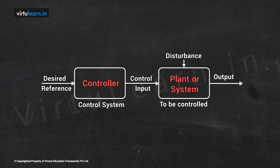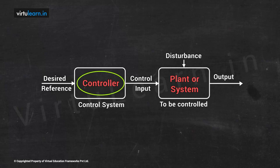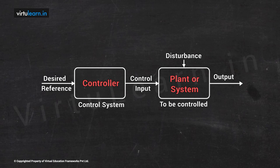In an open loop control system, we have a plant or process to be controlled, a controller that generates the control signal, and a final control element or actuator. The signal is given to the actuator, which manipulates one of the variables of the system so that the actual response follows the desired response. The controller has only the reference input.